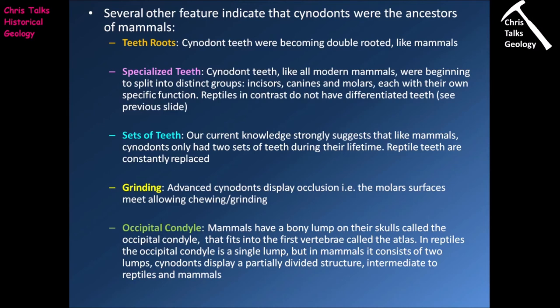We also see the appearance of specialized teeth — incisors, canines, and molars — which are obviously a strong indicator of a mammalian link. Reptiles do have variations in the size of their teeth, but the tooth design itself is consistent with no specialization. Another thing we notice is a change in the number of sets of teeth: current knowledge strongly suggests that like mammals, cynodonts only had two sets of teeth during their lifetime. In contrast, most reptiles have the capacity to replace damaged or lost teeth over time.